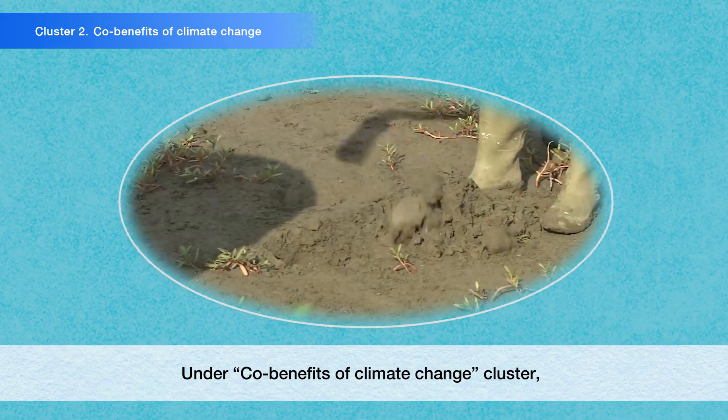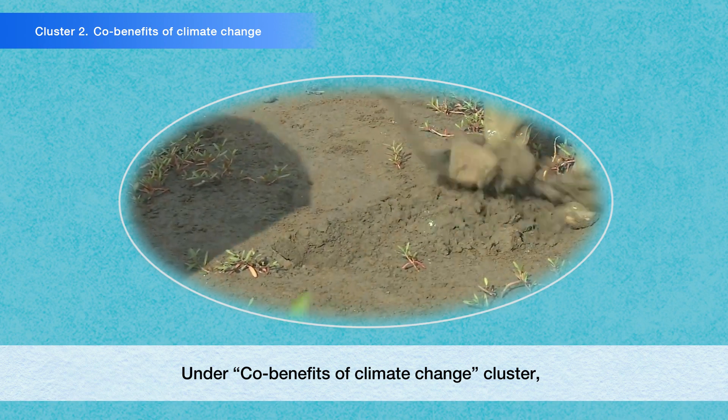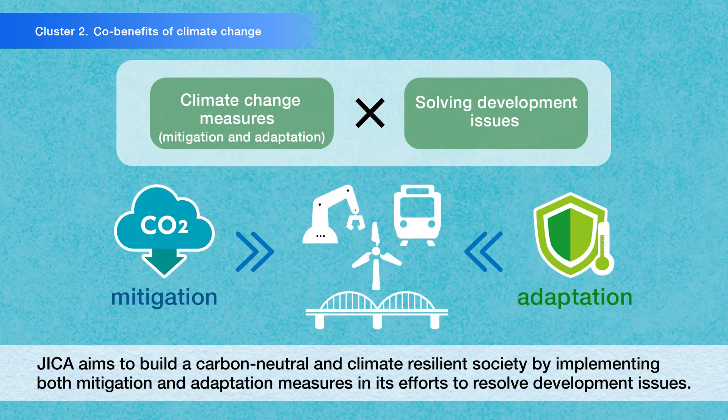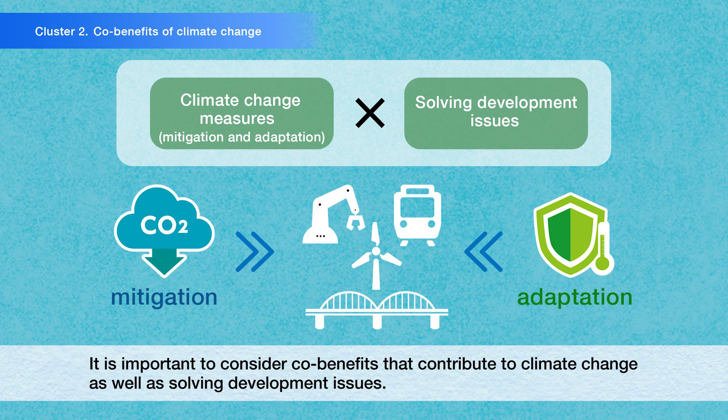Under the Co-Benefits of Climate Change cluster, JICA aims to build a carbon-neutral and climate-resilient society by implementing both mitigation and adaptation measures in its efforts to resolve development issues. It is important to consider co-benefits that contribute to climate change as well as solving development issues.